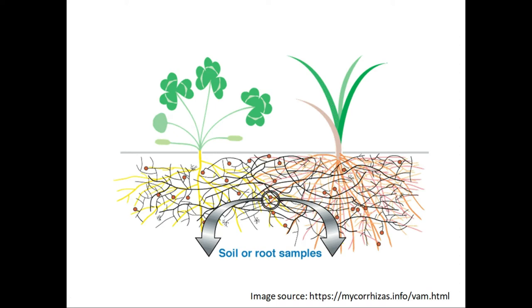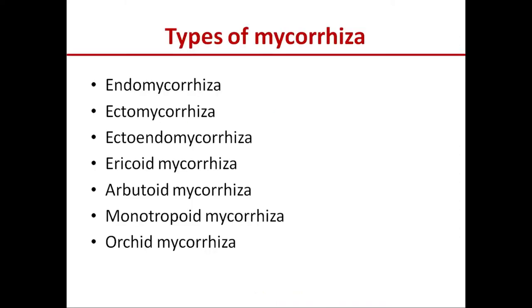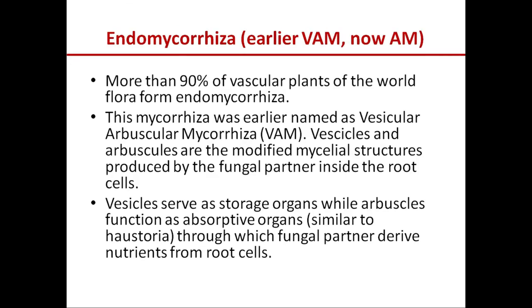There are many types of mycorrhiza. Basically we have endomycorrhiza and ectomycorrhiza, and others are all derivatives of these. The types include: endomycorrhiza, ectomycorrhiza, ecto-endomycorrhiza, ericoid mycorrhiza, arbutoid mycorrhiza, monotropoid mycorrhiza, and orchid mycorrhiza.